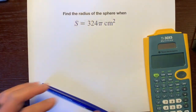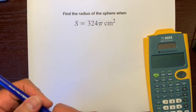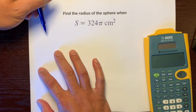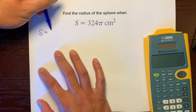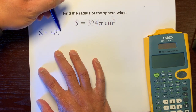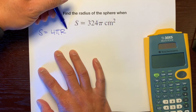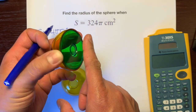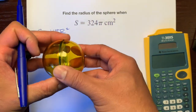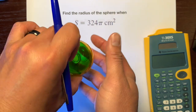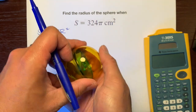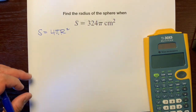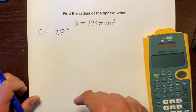So let's find the radius of this sphere. The surface area of a sphere is S equals 4 pi R squared. That means it takes four circles to cover up the entire surface of this sphere.